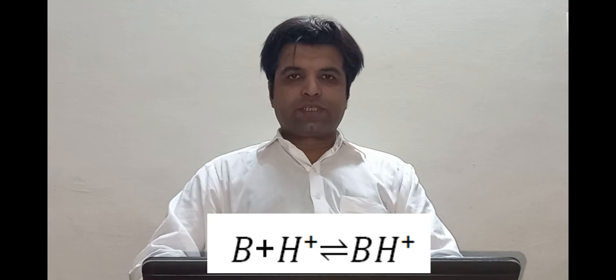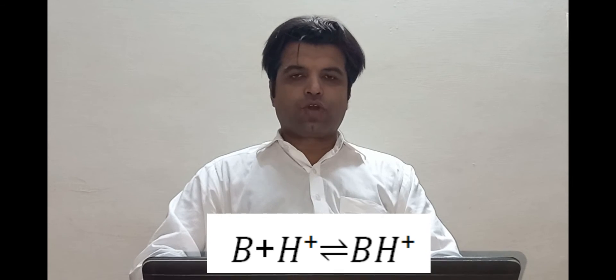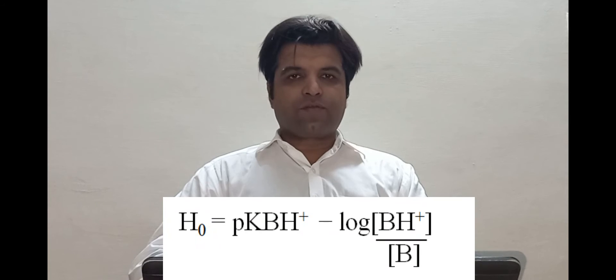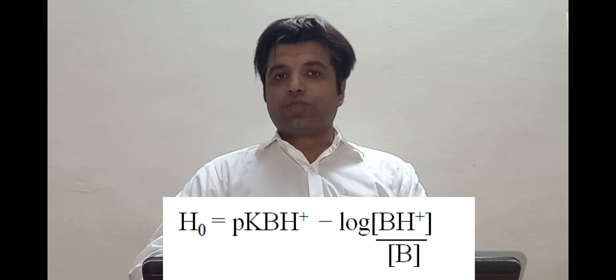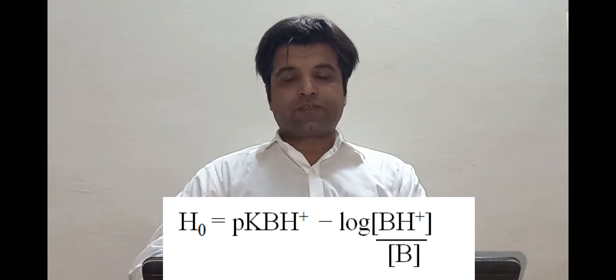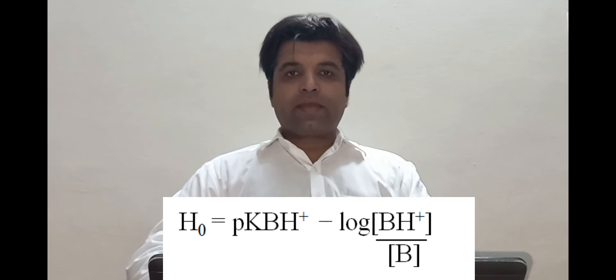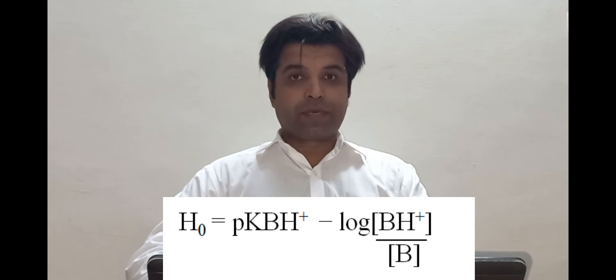A very weak conjugate base is denoted by BH⁺. When a base takes up the proton from the very strong acid, it becomes BH⁺. We can write the equation for the Hammett acidity function, denoted by H₀, which is equal to the negative log of K_BH⁺. BH⁺ is the conjugate base of the very strong acid, minus the log of the concentration of BH⁺ divided by the concentration of B.